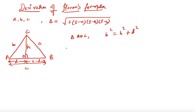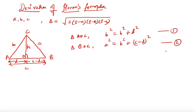Similarly, in triangle BOC, I can write A squared equals H squared plus (C minus D) whole squared. This is equation one and this is equation two. Now I will subtract both equations — equation one minus equation two — because my aim is to remove H squared and define the value of D in terms of A, B, and C.